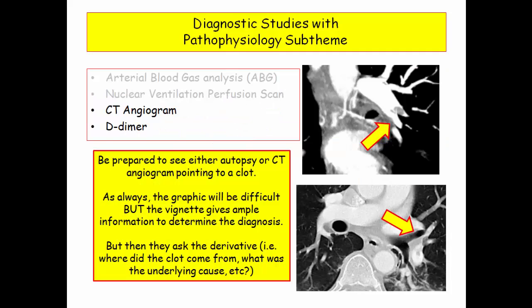Here are images of a CT angiogram. Be prepared to see either autopsy or CT angiogram with an arrow pointing to a clot. The vignette gives ample information to determine the diagnosis. Once you figure out they're talking about a pulmonary embolism, they will ask the derivative — like where did the clot come from (the femoral vein) or why did they have a clot (occult malignancy with paraneoplastic syndrome).